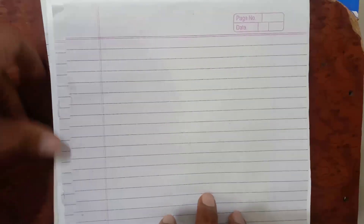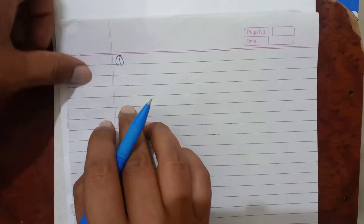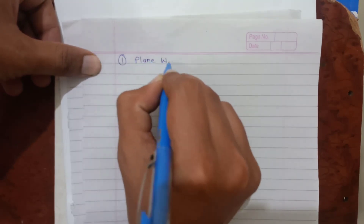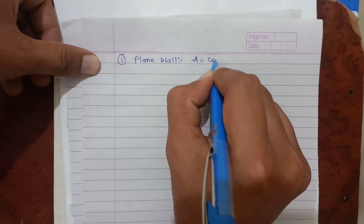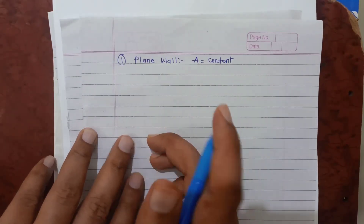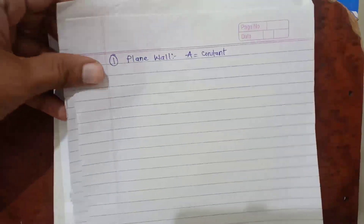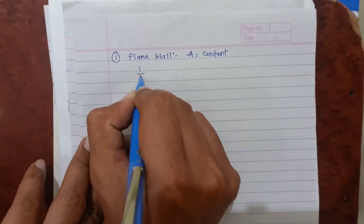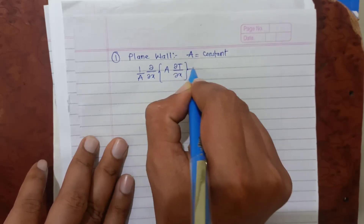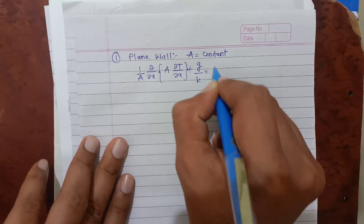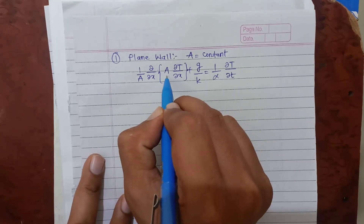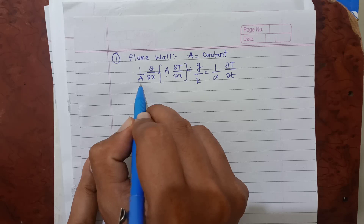The first case is that of a plane wall. We will consider the physical attributes and then convert them into mathematics. For a plane wall, the cross-sectional area A which participates in conduction heat transfer is constant. So if we rewrite our heat conduction equation: 1/A · ∂/∂x(A · ∂T/∂x) + g/k = 1/α · ∂T/∂t. Now in this case, the parameter A inside the differentiation bracket as well as outside the bracket are both constants.